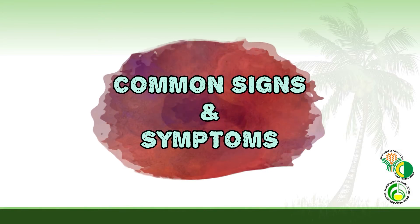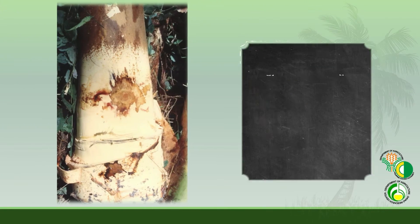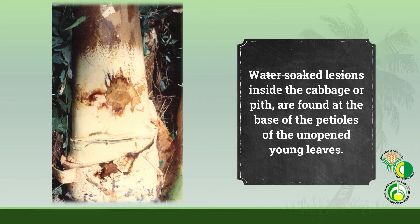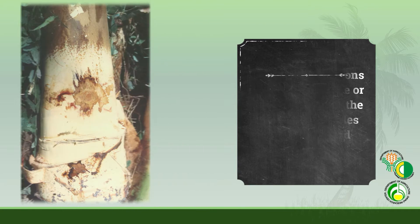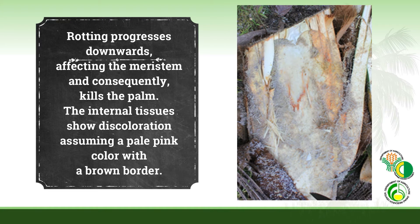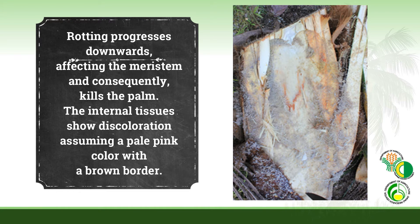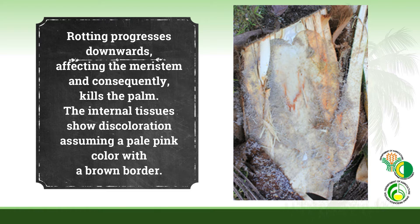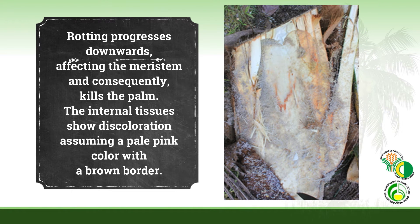Common Signs and Symptoms: Water-soaked lesions inside the cabbage or pith are found at the base of the petioles of the unopened young leaves. Rotting progresses downwards, affecting the meristem, and consequently kills the palm. The internal tissues show discoloration, assuming a pale pink color with a brown border.